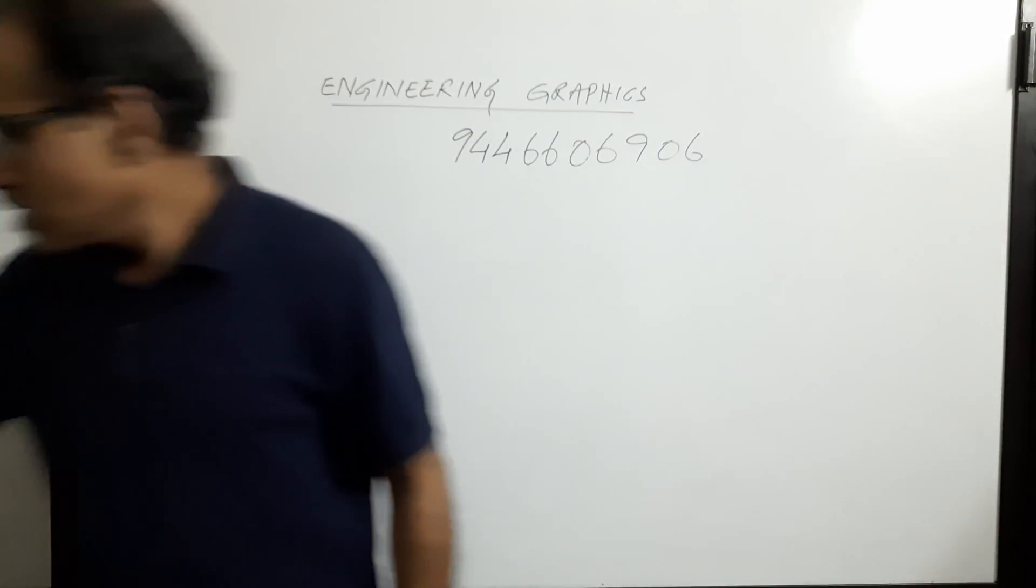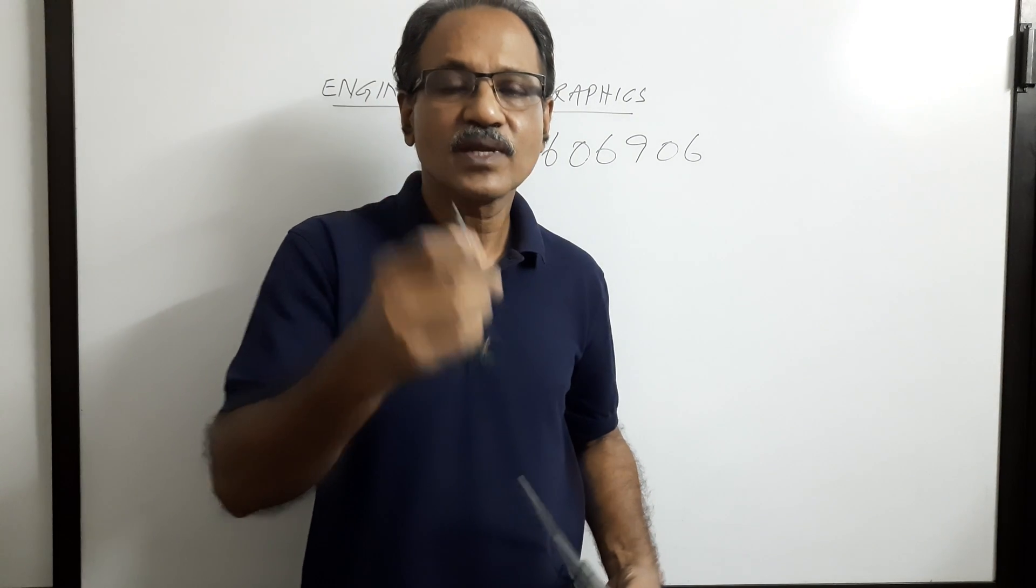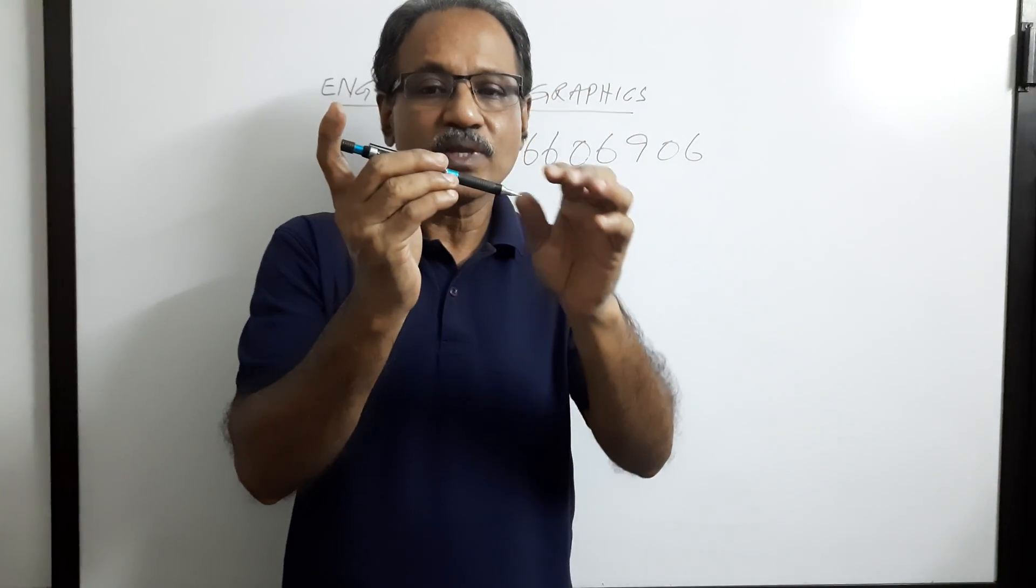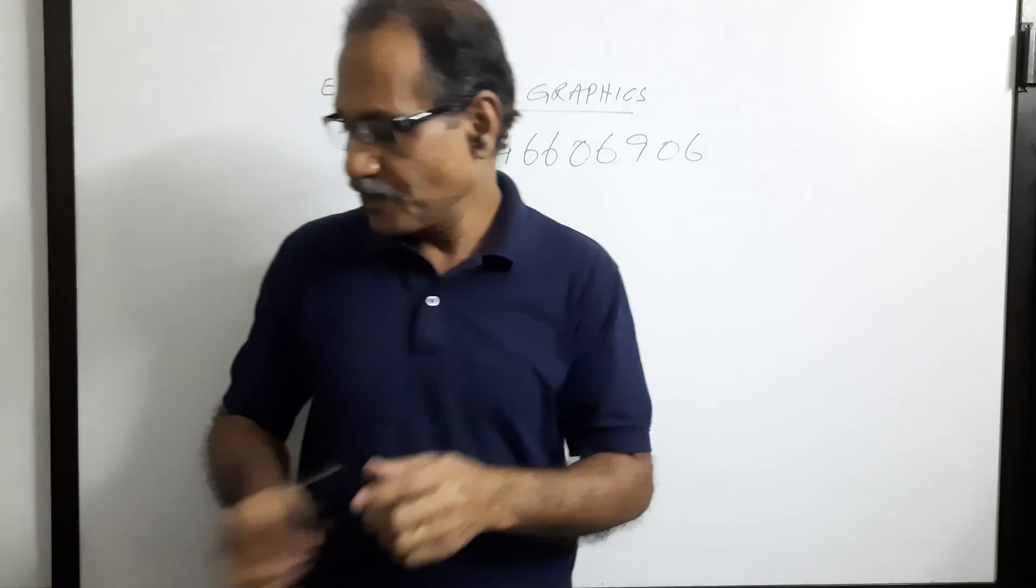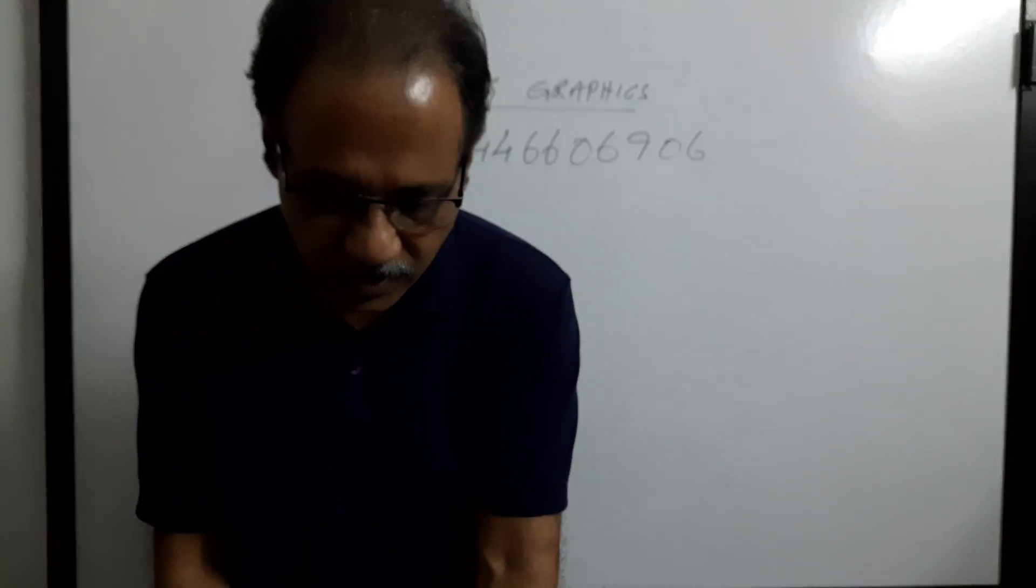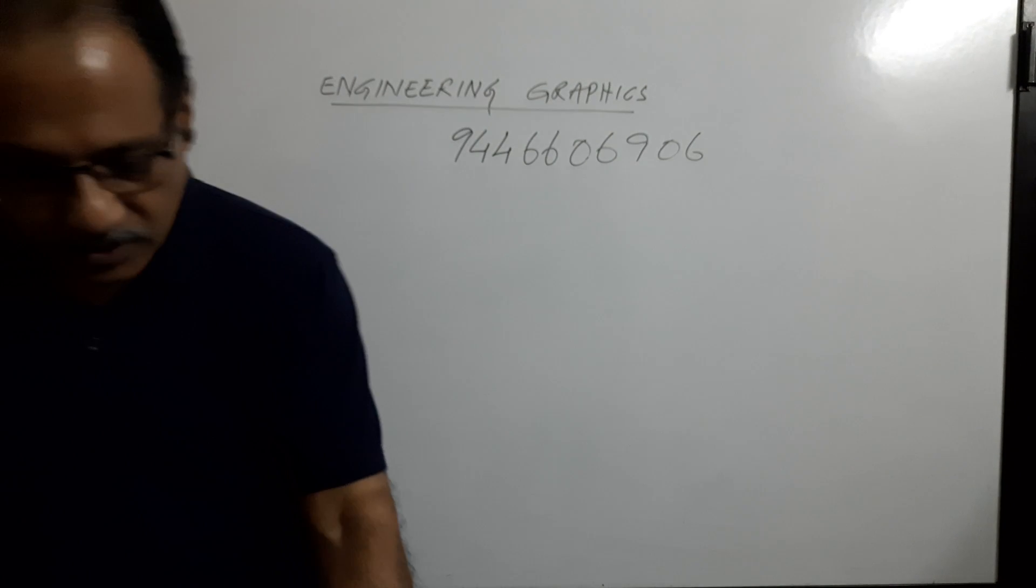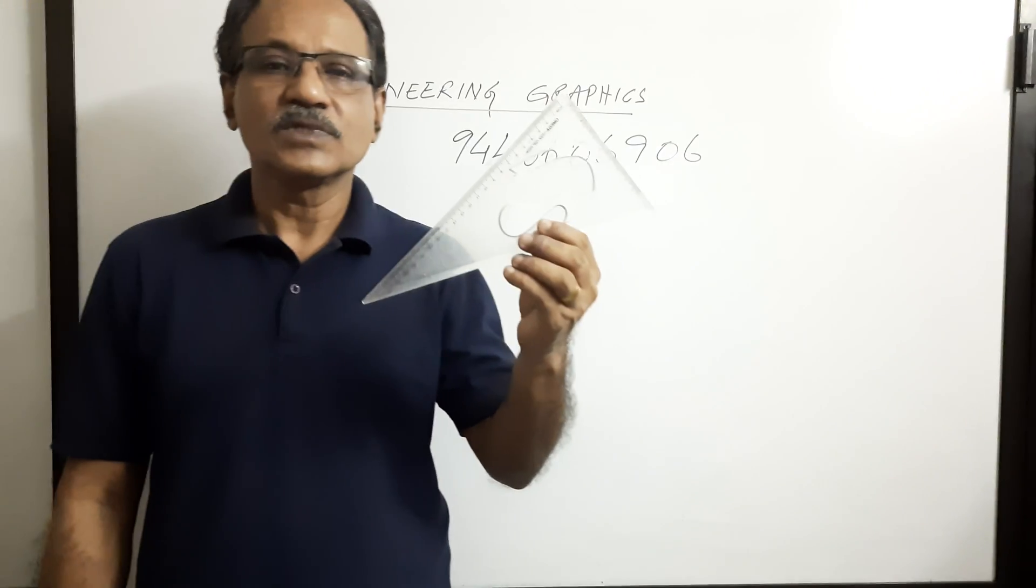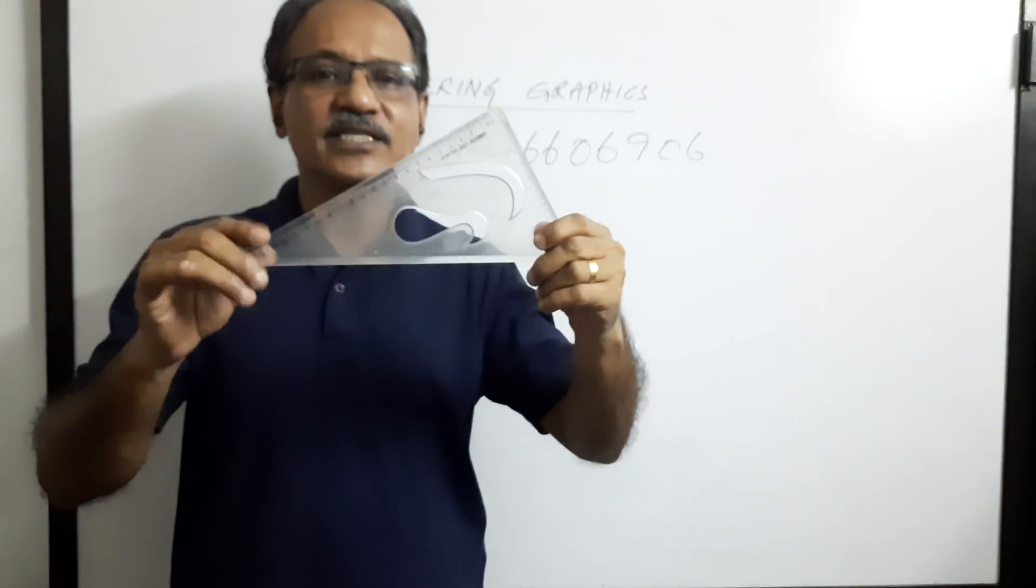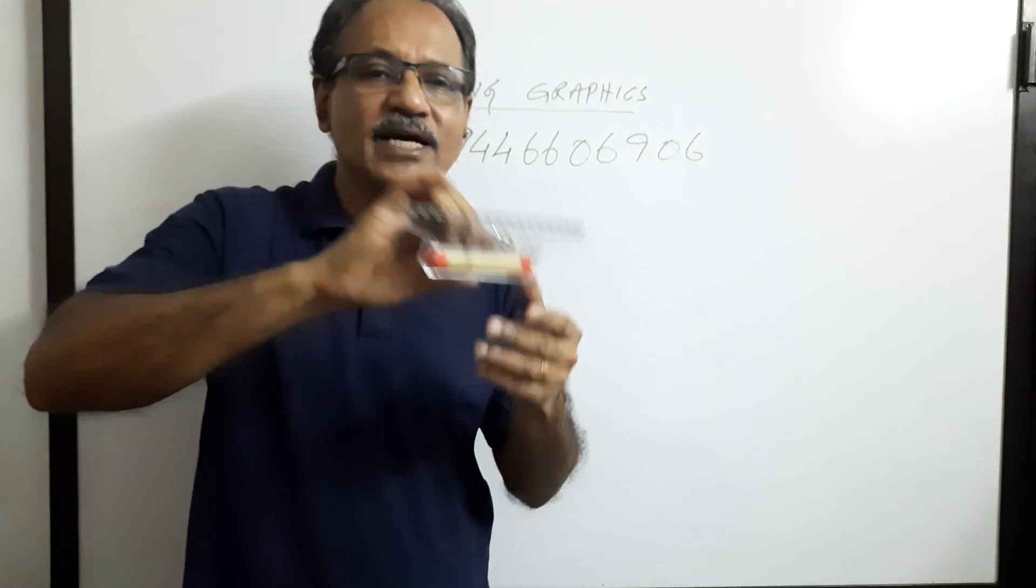Now coming to the instruments. You need certain instruments to draw. The first thing is a clutch pencil with a small lead inside, 0.5mm. You have to use H pencil to draw, not HB. Then you need a compass with a small clutch pencil attached to that. Then you need a set square, 45-degree set square with a protractor at the center. Another set square, 30-60-90 degrees. Then you can optionally use a roller, this helps you to draw parallel lines.